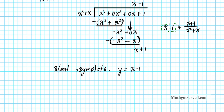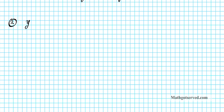Let's take a look at another example. Question number 2 — the task is also to find the slant asymptote of the rational function y equals 2x squared plus 3x plus 5, divided by x plus 1. Do you see why we have a slant asymptote here? Because the degree of the numerator is 1 more than the degree of the denominator, and whenever you have that situation, you always have a slant asymptote.